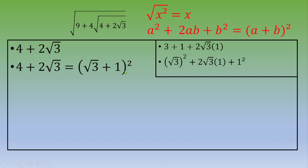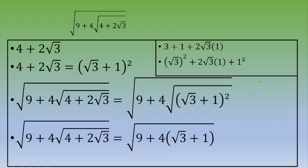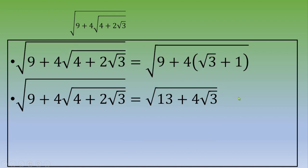So now you can say that 4 plus 2 square root of 3 equals square root of 3 plus 1, all squared. If you plug that into the original quantity, you get square root of 9 plus 4 times square root of square root of 3 plus 1 squared. Because square root of 3 plus 1 is a positive quantity, the square root and the square cancel.